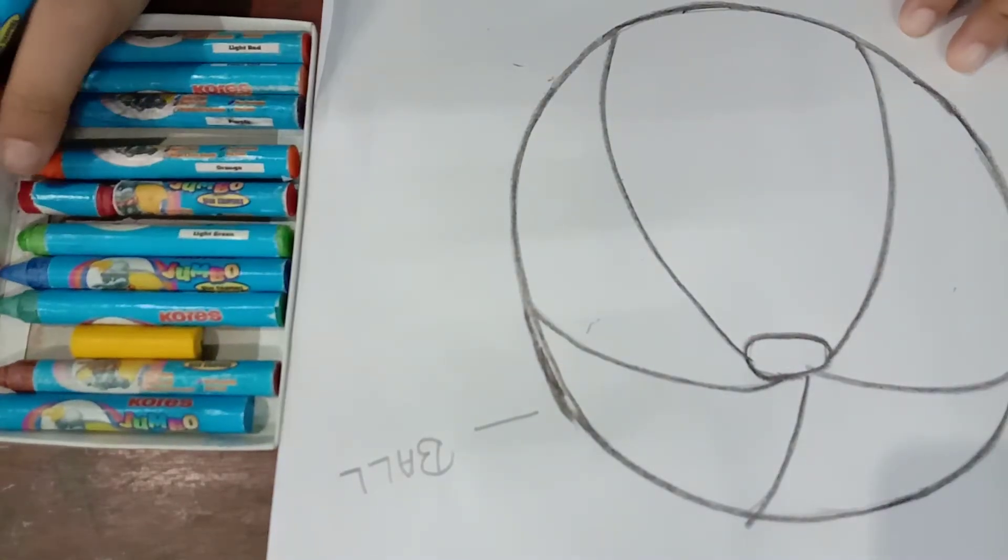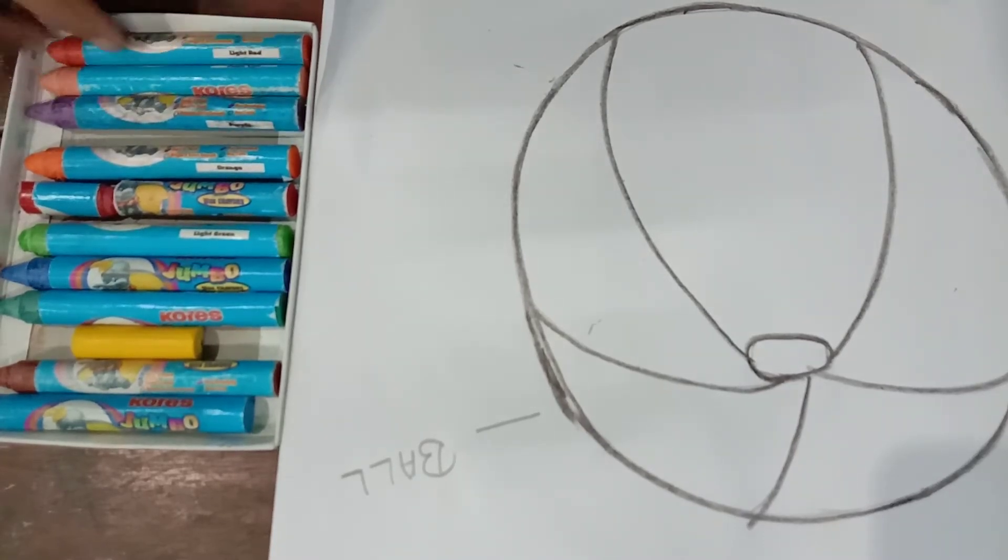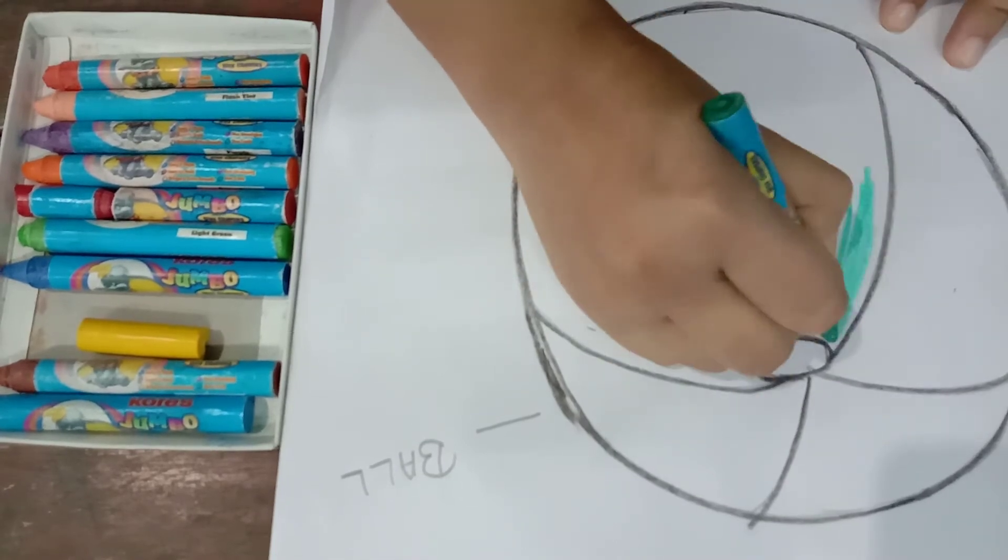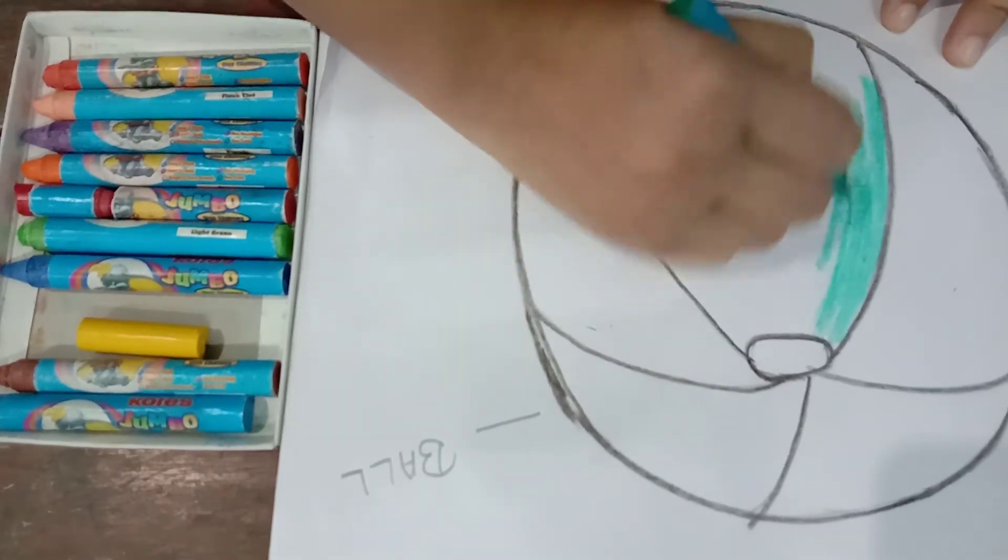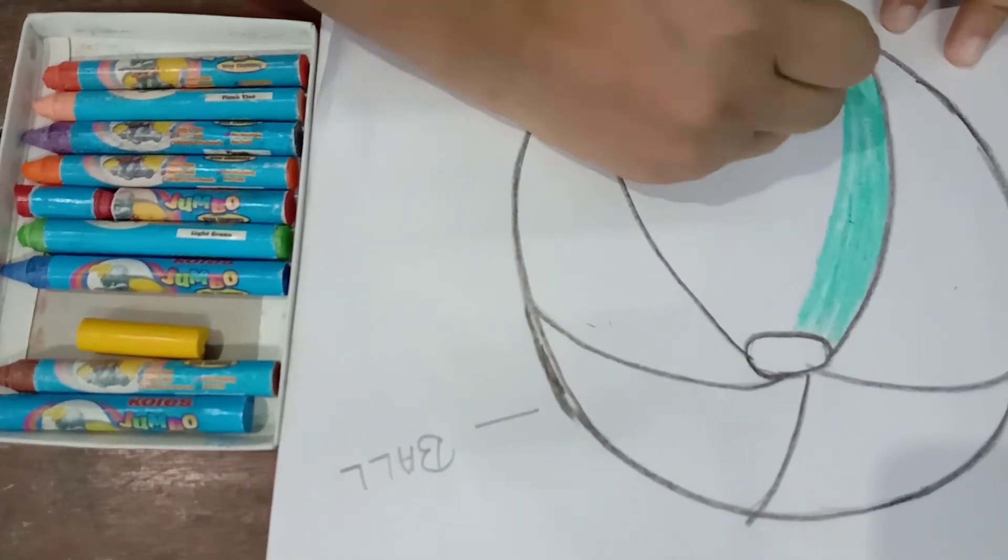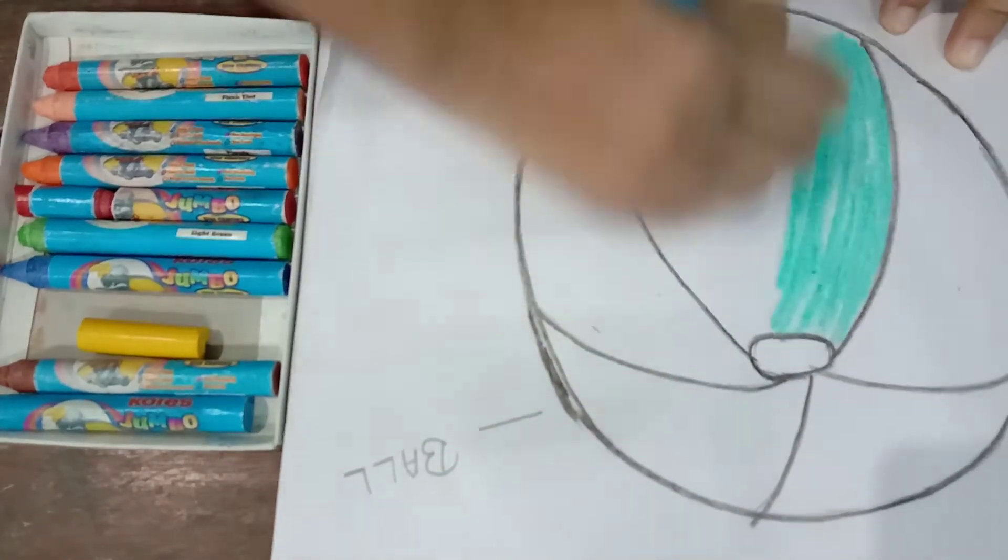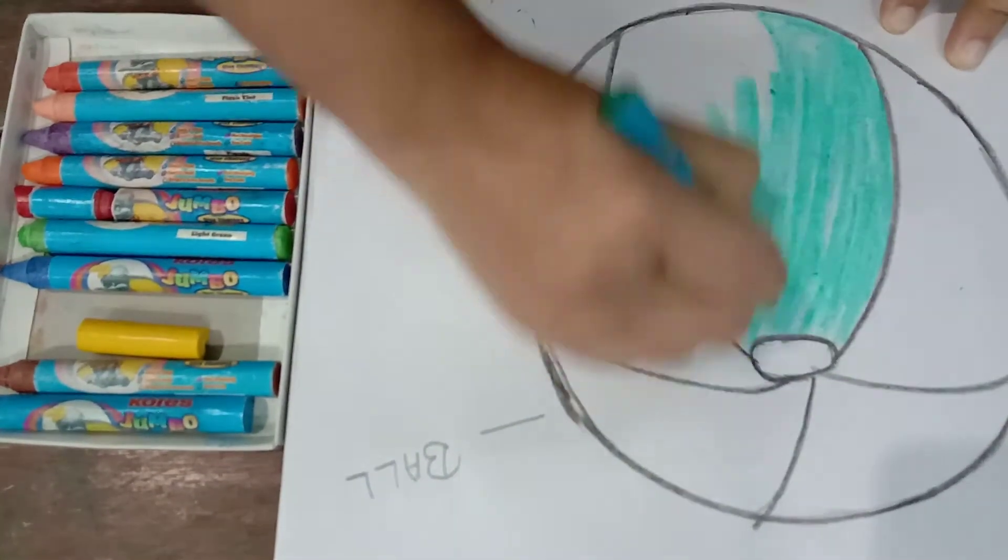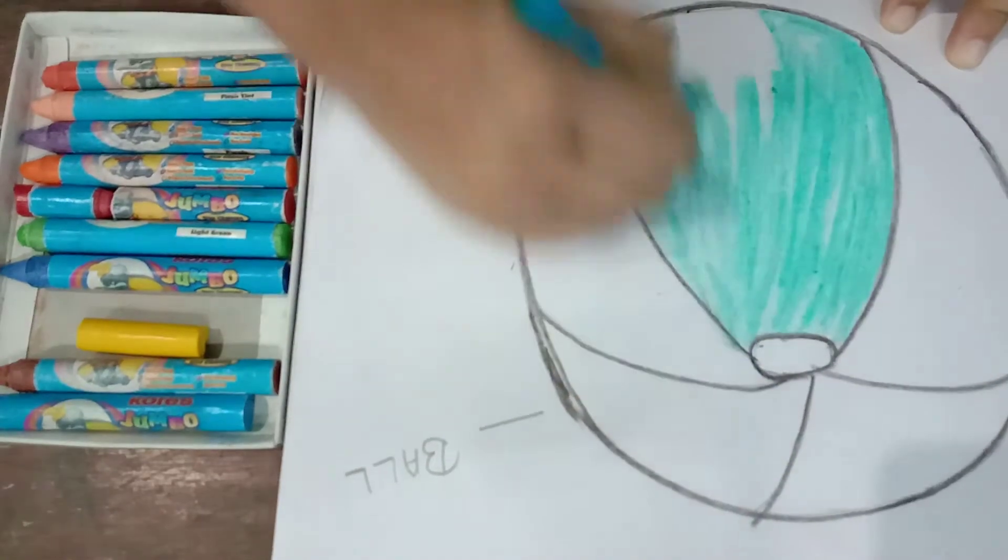Now, we will start to fill the color, our choice in it. First, I am taking green color, dark green. You can take any other color of your choice. First, I am taking green color.